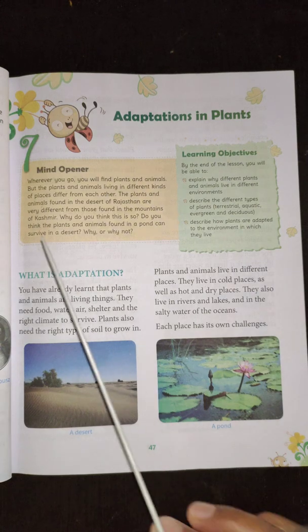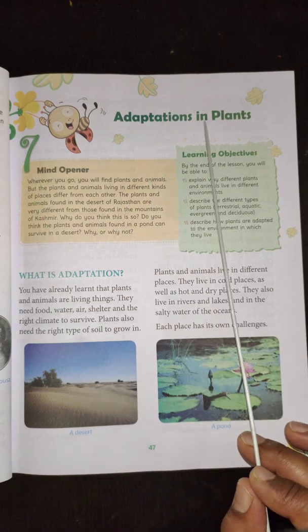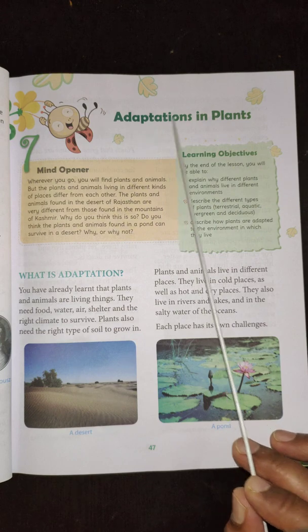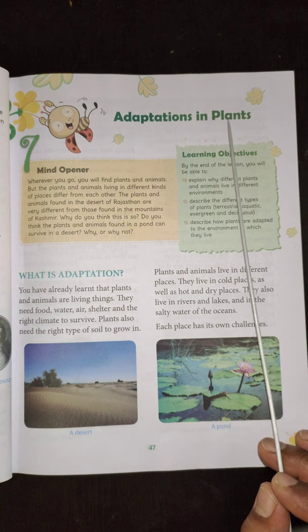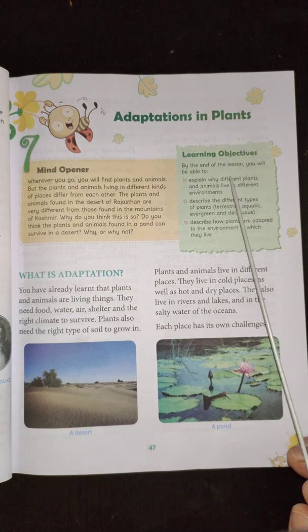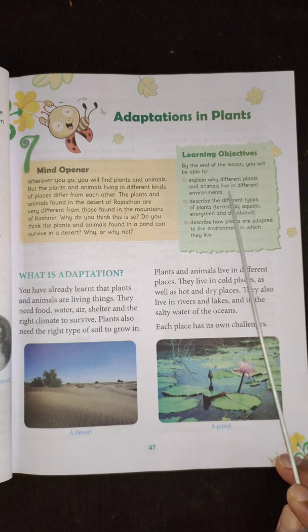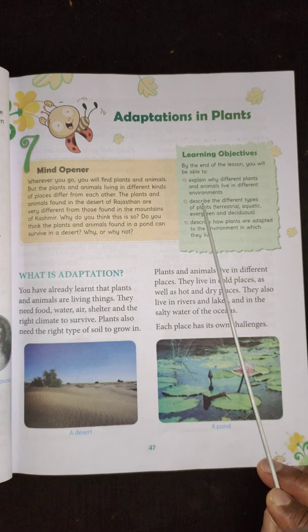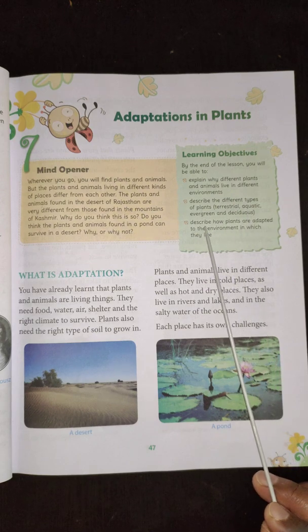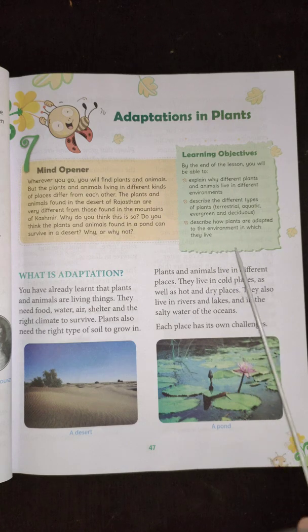Hello children, today we learn the seventh chapter in science. The name of the chapter is 'Adaptations in Plants'. Adaptations means these are the modifications seen in plants to adjust to the area or place where they live. At the end of this chapter we'll be able to explain why different plants and animals live in different environments, and describe how plants are adapted to the environment in which they live.